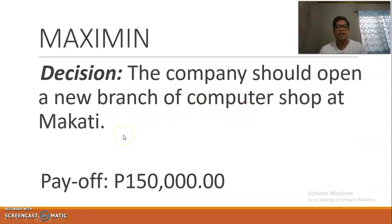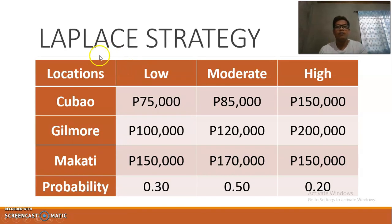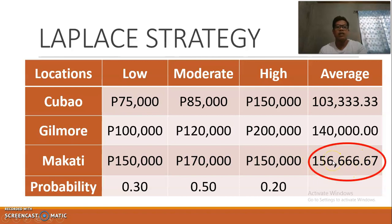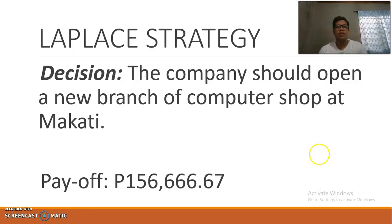For the Laplace strategy, we compute the average payoff for each alternative. For Cubao the average is 103,000; for Gilmore 140,000; for Makati the average payoff is 156,000. Among these averages, the highest payoff is 156,000, so the company should open a new branch at Makati.